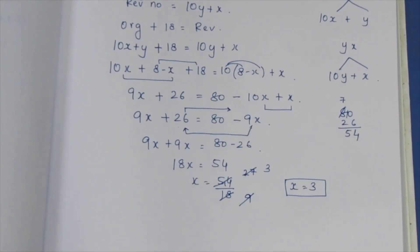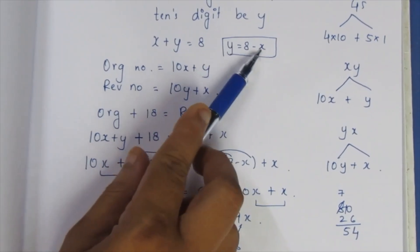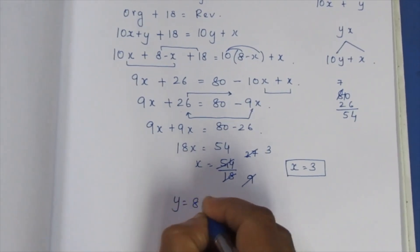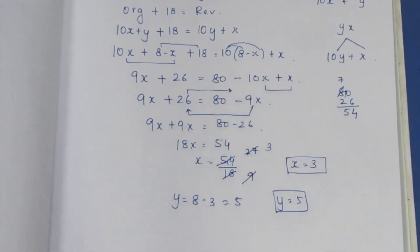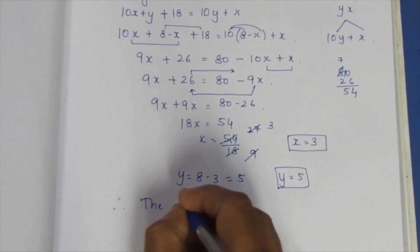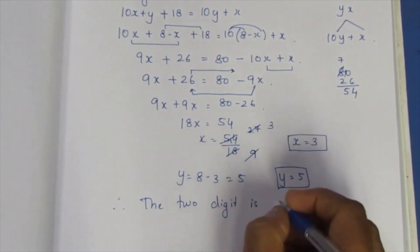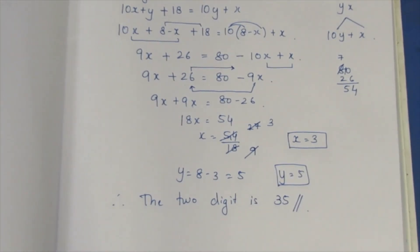Substituting x = 3 back: y = 8 − 3 = 5. So x = 3 and y = 5. Therefore, the 2-digit number is 35. Thank you.